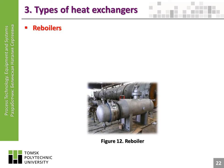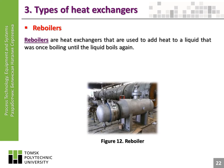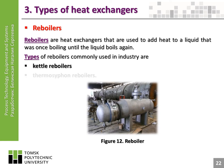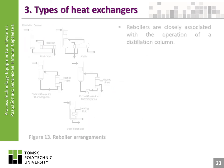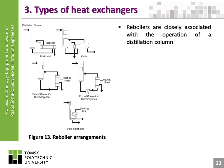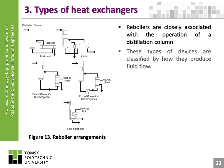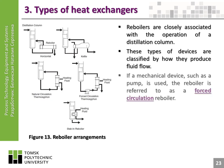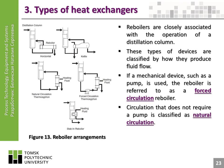Reboilers are heat exchangers used to add heat to a liquid that was once boiling until the liquid boils again. Types of reboilers commonly used in industry are kettle reboilers and thermosyphon reboilers. Reboilers are closely associated with the operation of a distillation column. These devices are classified by how they produce fluid flow. If a mechanical device such as a pump is used, the reboiler is referred to as a forced circulation reboiler. Circulation that does not require a pump is classified as natural circulation.